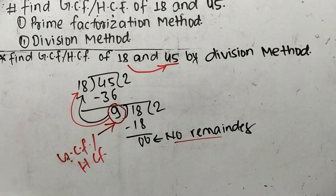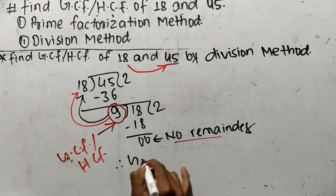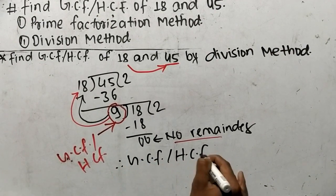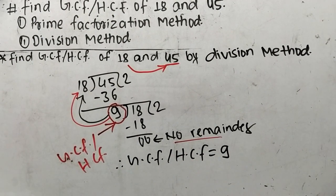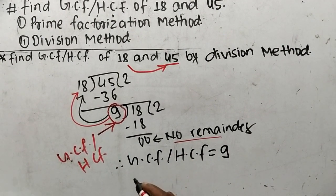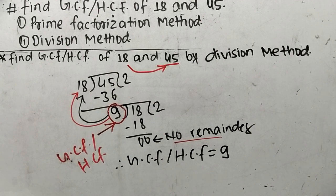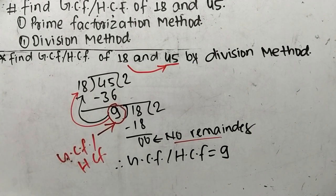Therefore we can say GCF or HCF is equal to 9. In this way we can find out GCF or HCF by division method. This much for today. If you have any questions for math, just comment your question below and we shall provide a video solution of your question. Thank you.